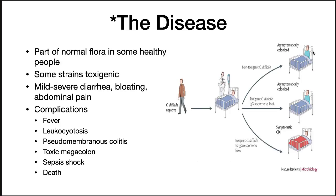C. diff is a complicated infection in humans. It appears to be part of the normal microbiota of some people and causes no problem in them. Some strains are non-toxigenic and colonize humans asymptomatically. However, some strains produce toxins that cause mild to severe bloating and abdominal pain. In some patients with a strong IgG response to the toxins made by C. diff, they are able to control the infection.